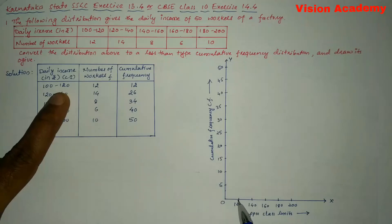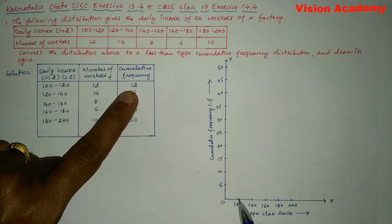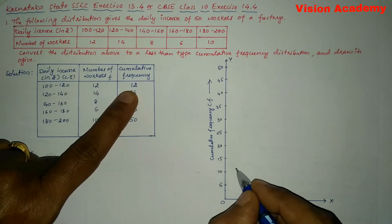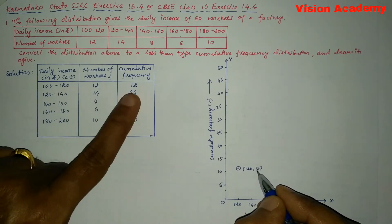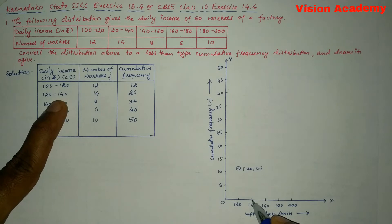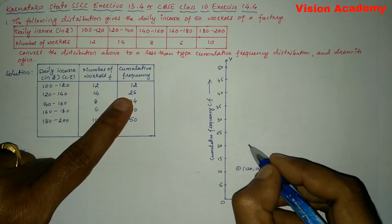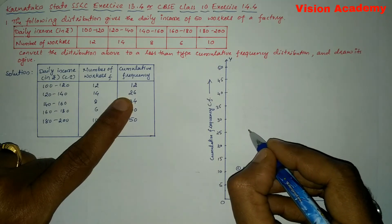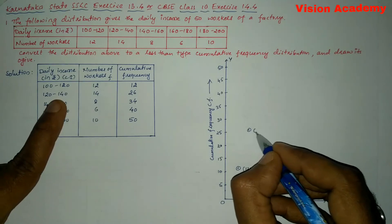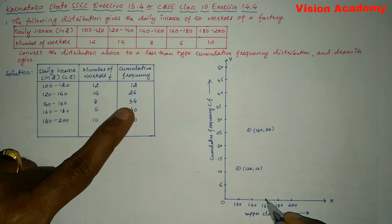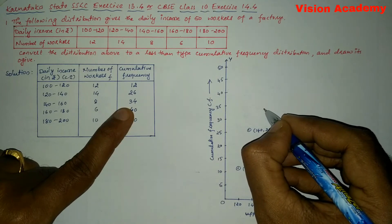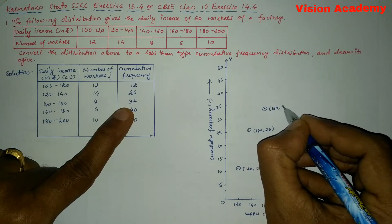On the X-axis we take 120 and on the Y-axis cumulative frequency 12, so the first point has coordinates (120, 12). Next, 140 on X and 26 on Y, so the second point has coordinates (140, 26). Then 160 on X and 34 on Y — this is one point below 35 — so coordinates are (160, 34).